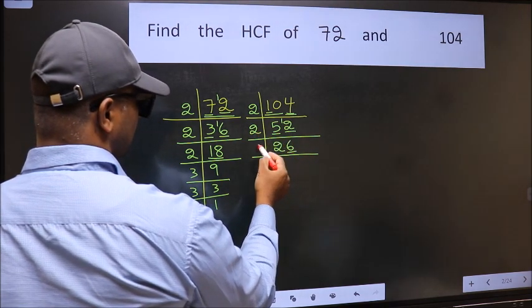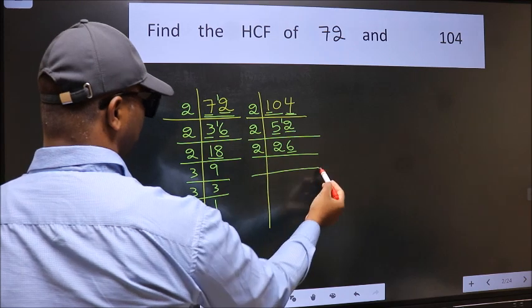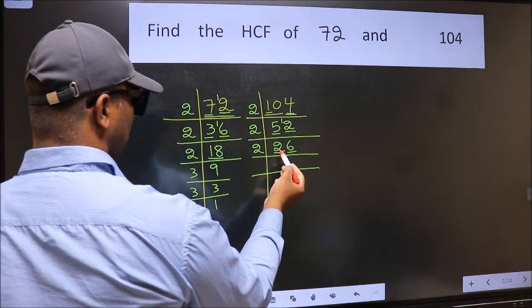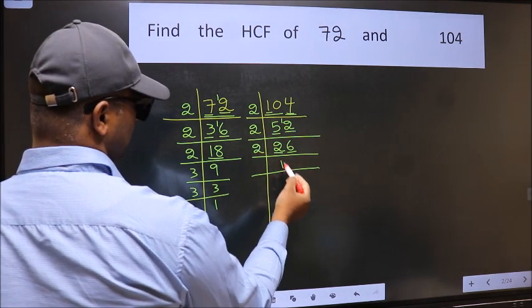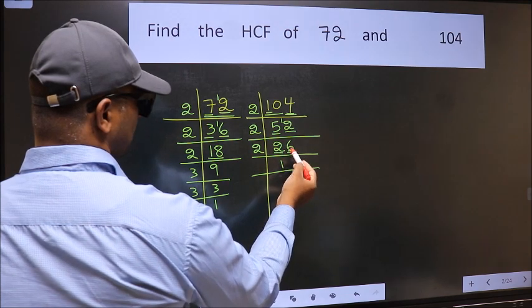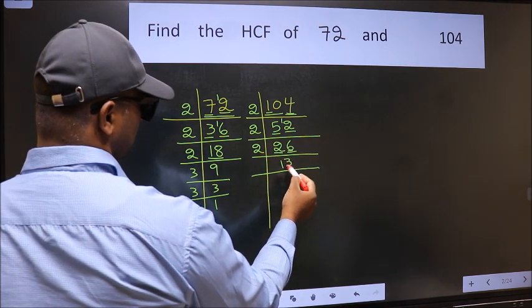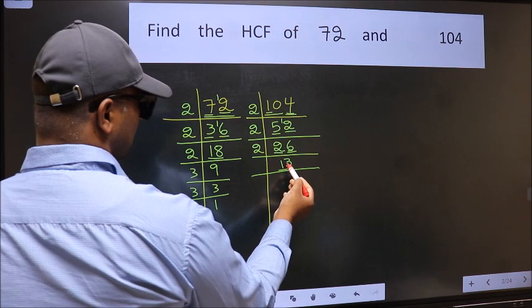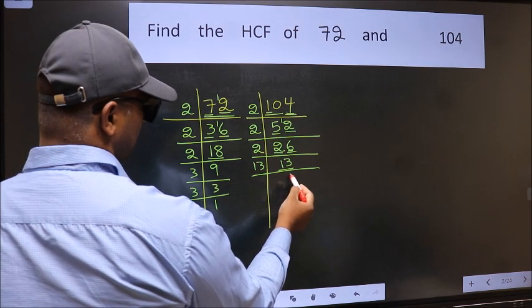Now last digit 6 even, so take 2. First number 2. When do we get 2 in 2 table? 2 times 1 equals 2. The other number 6. When do we get 6 in 2 table? 2 times 3 equals 6. Now 13. 13 is a prime number, so 13 times 1 equals 13.